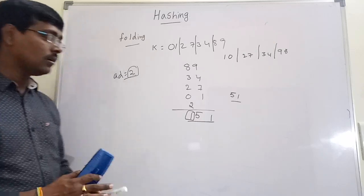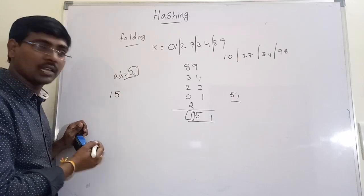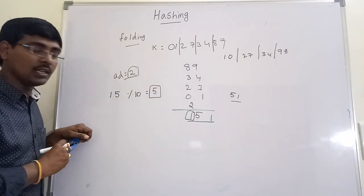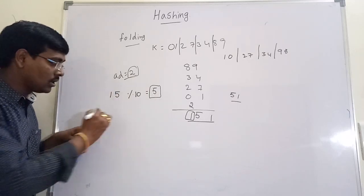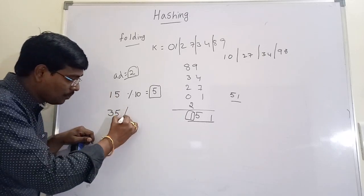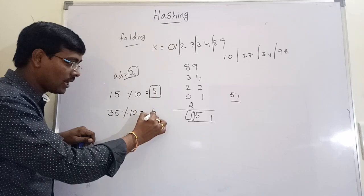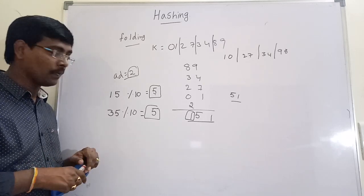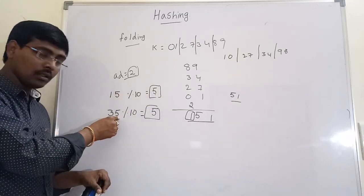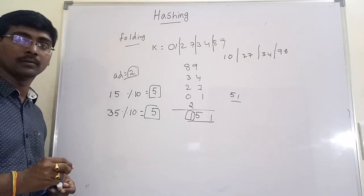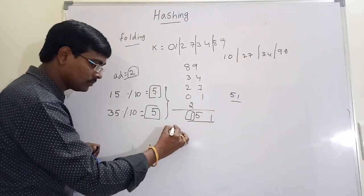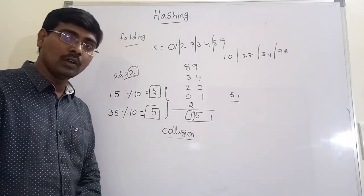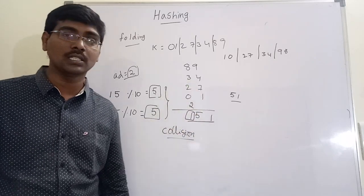All these are hashing techniques. But in these techniques, if more than one element wants to occupy the same position — for example, using division method with table size 10, 15 mod 10 = 5 and 35 mod 10 = 5, but position 5 is already filled — this situation is called a collision. In the next session we will discuss what collision is and how to resolve it. The collision resolution techniques are discussed in the next session. Thank you.